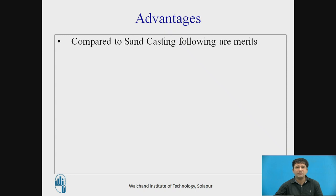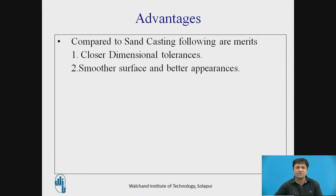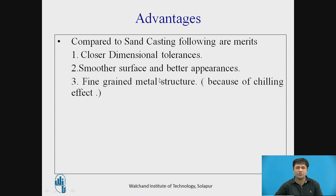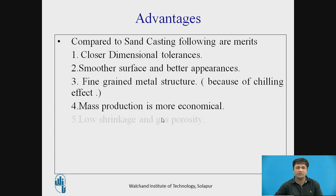The advantages of die casting compared to sand casting are: first, closer dimensional tolerances, because the mold is made of metal; second, smoother surface and better appearance; third, fine grain metal structure due to the chilling effect, which is more compared to sand casting; fourth, mass production is more economical because the mold is made of metal or alloy; fifth, low shrinkage and gas porosity — these problems are less compared to sand mold.